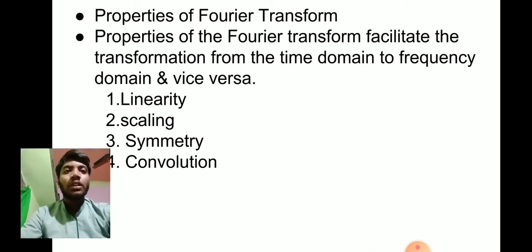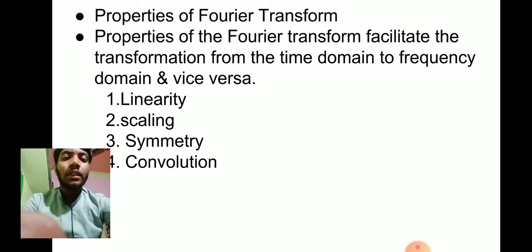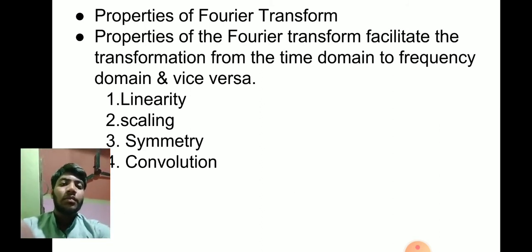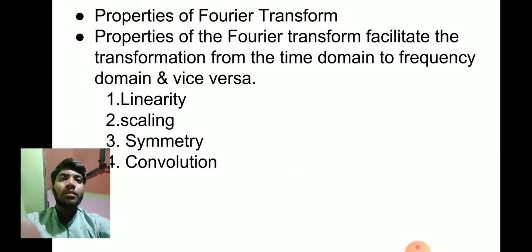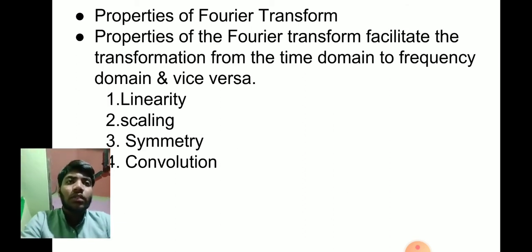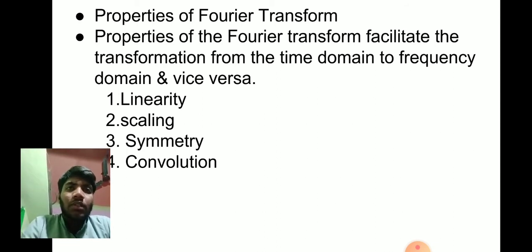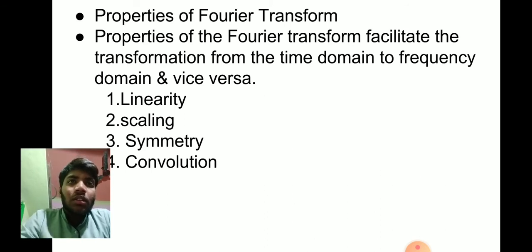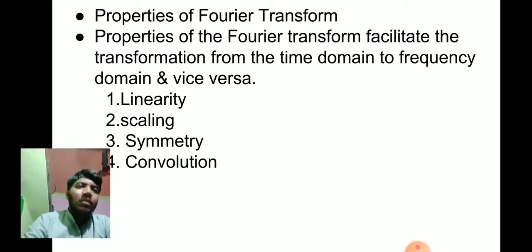Properties of Fourier Transform satisfy linearity and principle of superposition. Consider two functions x1 of t and x2 of t. If f of x1 of t is equal to x1 omega and f of x2 of t is x2 omega, then f of a1 x1 t plus a2 x2 of t is equal to a1 x1 omega plus a2 x2 omega. So this is linearity.